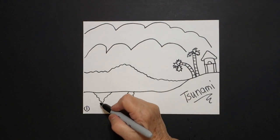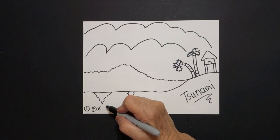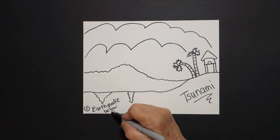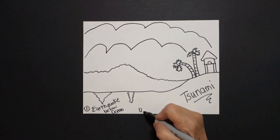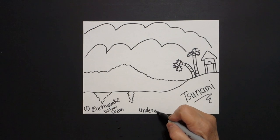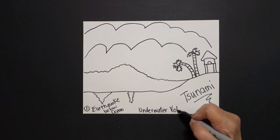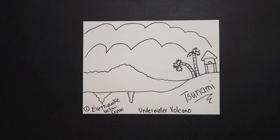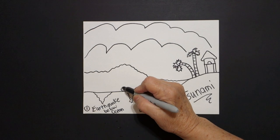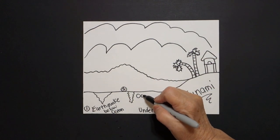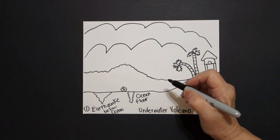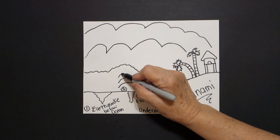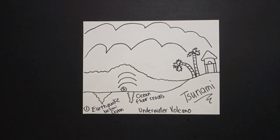I'm going to put a number one, because what causes a tsunami initially is an earthquake below the ocean. If it's not an earthquake, it can also be an underwater volcano — yes, there can be volcanoes under the water. So number one is the earthquake below the ocean. Number two is right above it, and once the earthquake hits, the next thing that happens is that the ocean floor, for whatever reason, cracks. And when that happens, it sends out bursts of energy all the way up into the ocean water.